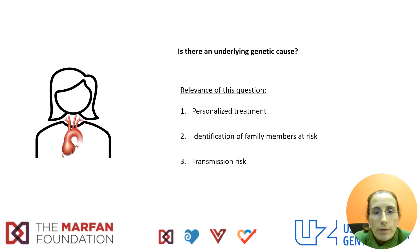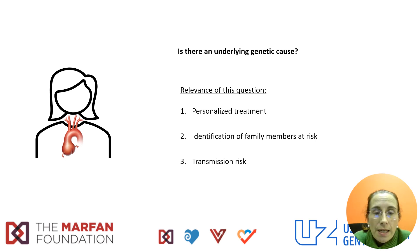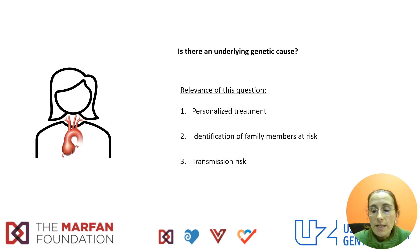Whenever we have a patient with a thoracic aortic aneurysm, we should ask ourselves whether that patient could have an underlying genetic disease. This is important because knowing the gene might allow us to give that patient a personalized treatment, help us identify other family members at risk of aortic disease, and estimate the transmission risk of the disease to other generations.